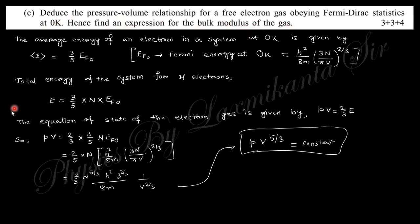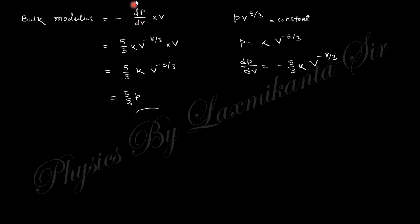Next question: deduce the pressure-volume relation for a free electron gas obeying Fermi-Dirac statistics at 0 K, and hence find the bulk modulus. The average energy at 0 K is (3/5)·E_F0, where E_F0 is the Fermi energy at 0 K, which depends on N and V. The total energy E = (3/5)·N·E_F0. The equation of state is PV = (2/3)E, giving P ∝ V^(-5/3), or PV^(5/3) = constant. The bulk modulus B = -V·(dP/dV) is then derived from this relation, yielding the final expression for the bulk modulus of the free electron gas.